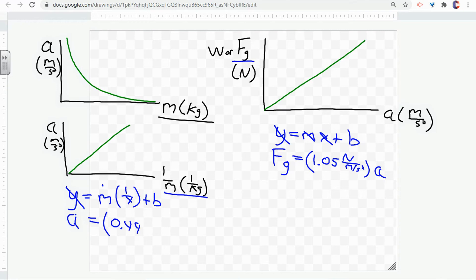And that unit is going to be meters per second squared over 1 over kilograms. So we're going to flip this and multiply. So we're going to get kilogram meter per second squared.